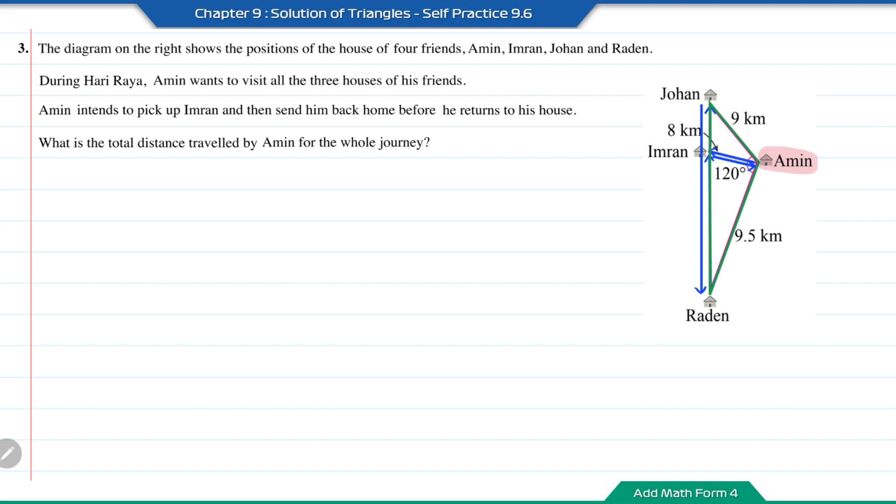So based on the bigger triangle here, the distance between Johan and Raden's house, the distance is opposite this 120 degrees. And we have the distance of the other two sides. Therefore, using the cosine rule, we can find the distance from Johan's house to Raden's house. So let's say we let the distance between Johan's house to Raden's house equal to x. Then x square is equal to 9 square plus 9.5 square minus 2 times 9 times 9.5 cos 120. Then x will be the square root of the answer here, which is equal to 16.023.